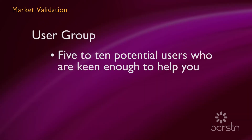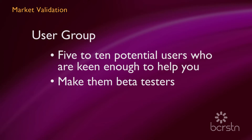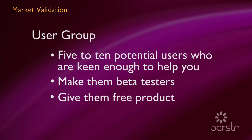So assuming we've found customers, talked to them, they want to buy our product, we know what they'll pay, and we know there's a large enough market — are we done? We're only about a third of the way there. We now need to assemble a small group of these target market people and develop a user group. It doesn't have to be very big — five to ten potential users who are keen enough to help you, working with you during the development process, testing out ideas, features, and the user interface as you go along. You make them beta testers and offer them a free product for a period of time.